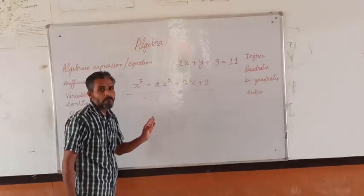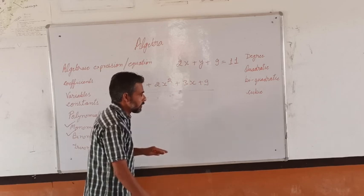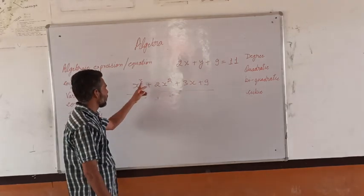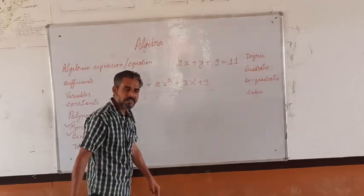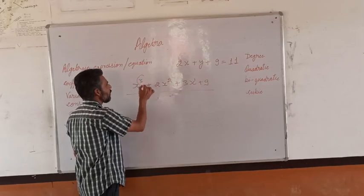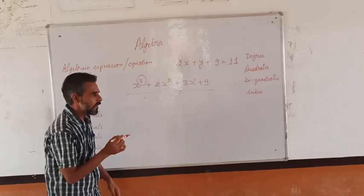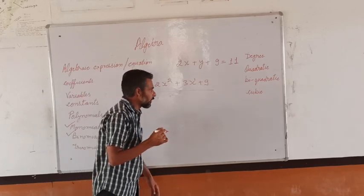Degree means the exponential powers of the variables. Now here we are having the powers. Here three, here two, here nothing, which means one. Power one is there. So degree is the highest power. The highest power of the variable in the given expression is known as the degree.